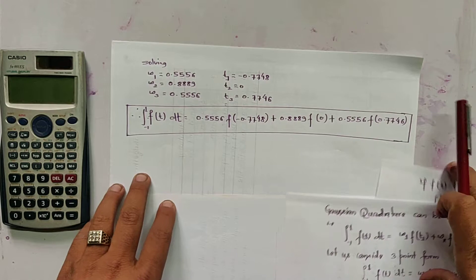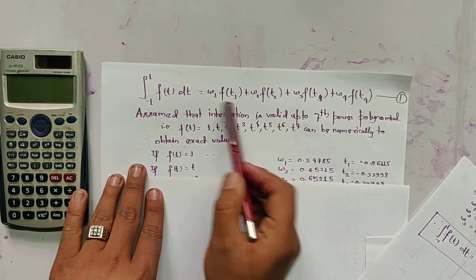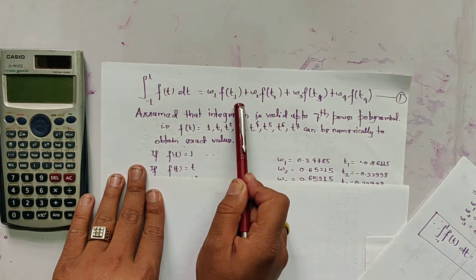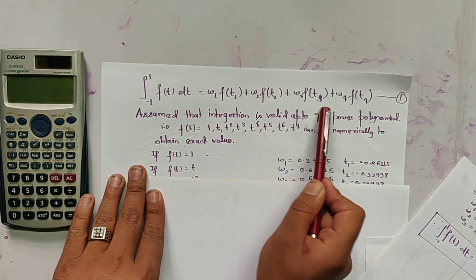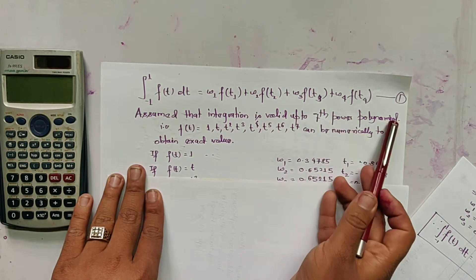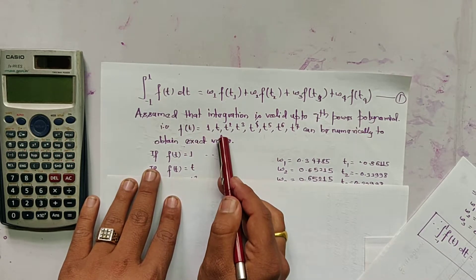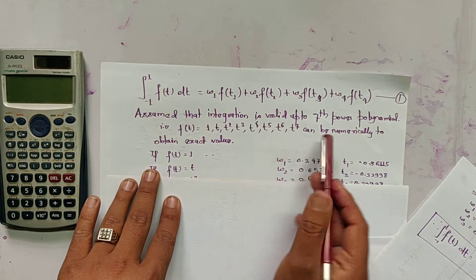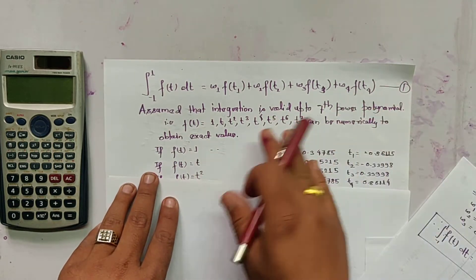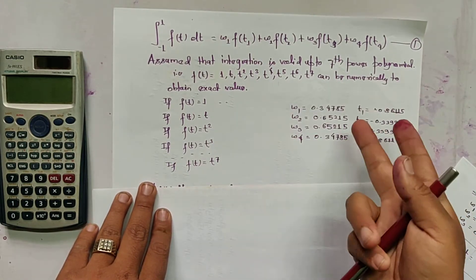Similarly, we can derive it for the four-point form. For the four-point form, we suppose the equation as the integral from minus 1 to 1 of f(t) dt equals w1·f(t1) + w2·f(t2) + w3·f(t3) + w4·f(t4). We assume it is valid up to the 7th power of the polynomial. That is, f(t) equals 1, t, t², t³, t⁴, t⁵, t⁶, and t⁷ can be numerically obtained for the exact value. When f(t) equals each of these, we get one equation for each case.